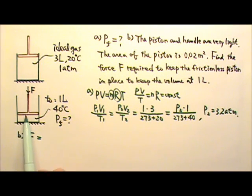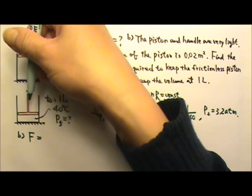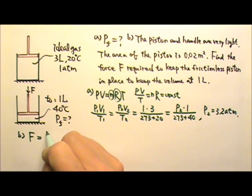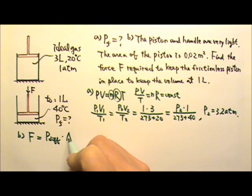So the pressure difference pushes on the piston upward, and this force has to overcome that force produced by the pressure difference. The force will be pressure difference times the area.